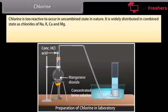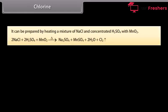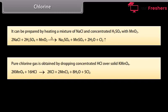Chlorine is too reactive to occur in uncombined state in nature. It is widely distributed in combined state as chlorides of Na, K, Ca and Mg. It is usually prepared by heating concentrated HCl with MnO2. It can also be prepared by heating a mixture of NaCl and concentrated H2SO4 with MnO2. The gas is passed through water to remove HCl, then dried by passing through concentrated H2SO4. Pure chlorine gas is obtained by dropping concentrated HCl over solid KMnO4.